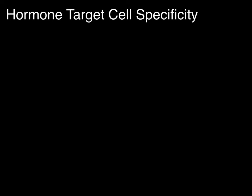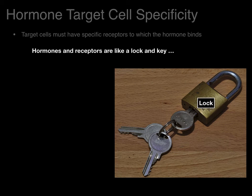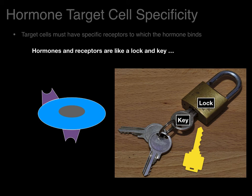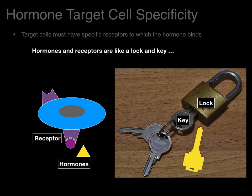Now, hormone target cell specificity. Target cells must have specific receptors to which the hormone binds — hormones and receptors are like a lock and key. If we have a key that doesn't fit the lock, you can try all day sticking it in the lock and it's not going to open. Here we have a target tissue with a receptor, and one hormone that doesn't fit — the yellow hormone — will not activate that receptor, whereas the purple hormone fits the receptor like a key and will activate that tissue.